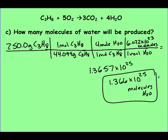You should have gotten 1.366 × 10²⁵ molecules of water. Make sure that your answer includes the × 10²⁵. A lot of times you may leave that off from what the calculator gives you. Remember, we're solving for molecules, so we should have a large number.